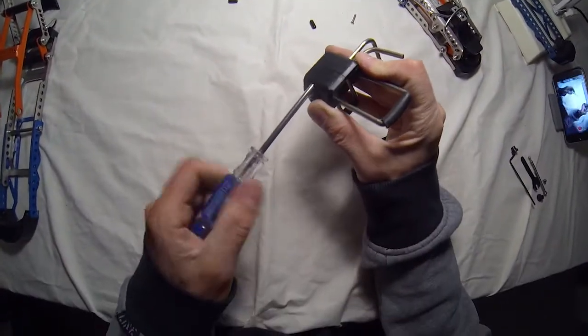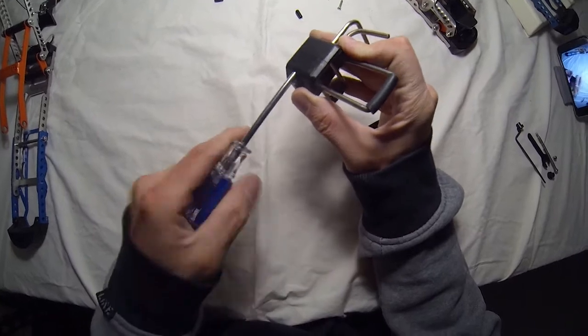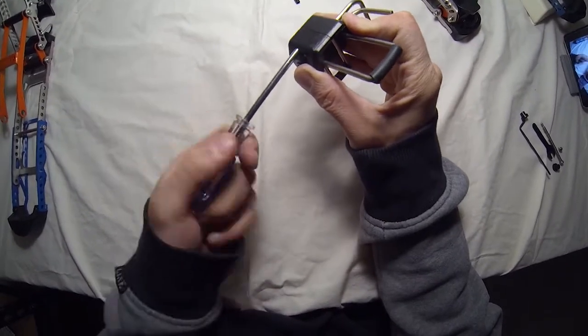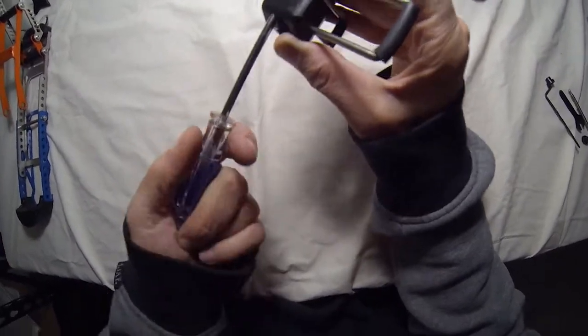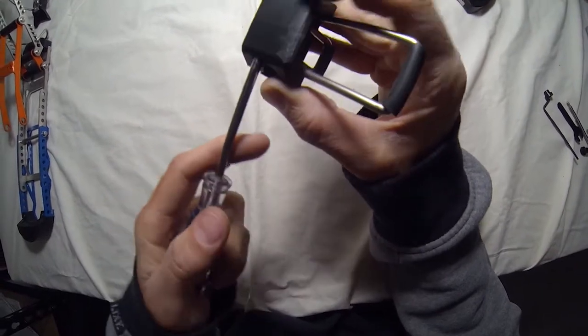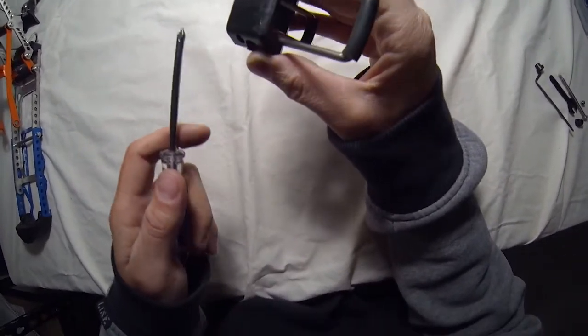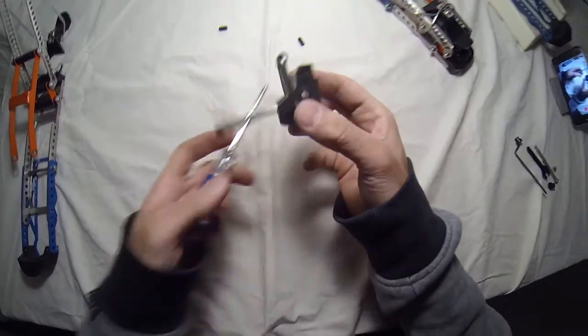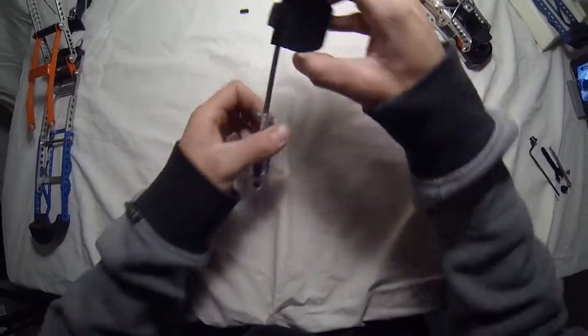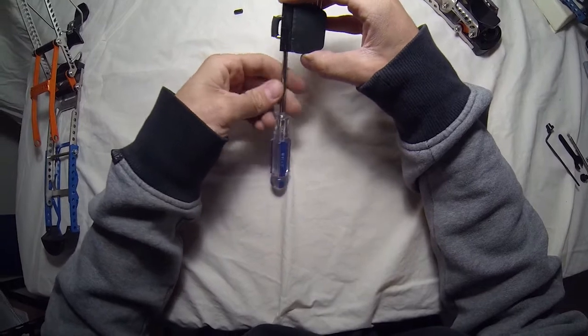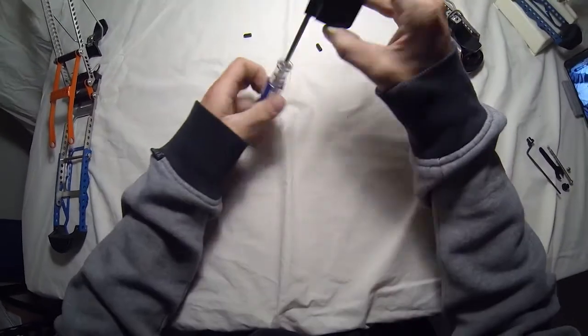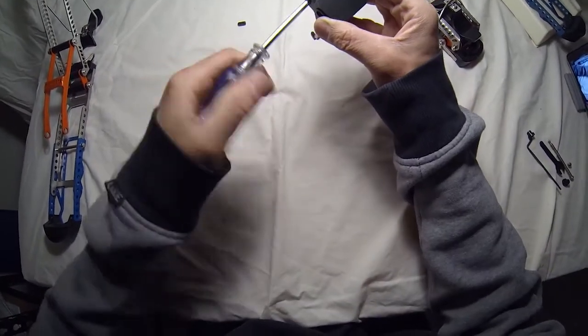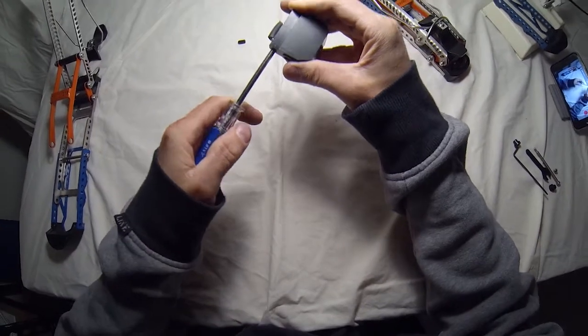And we're going to tighten this guy back up. And you can see that these two parts are going to squish together there. And that's going to show you that it's tight. And drop this other screw that came out in. Alright, so that's nice and tight.